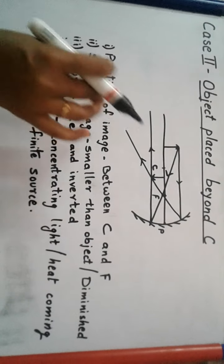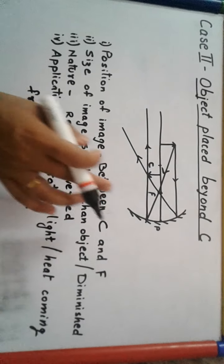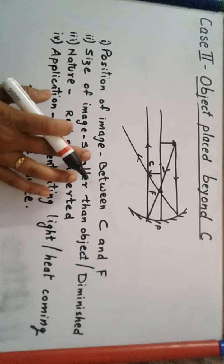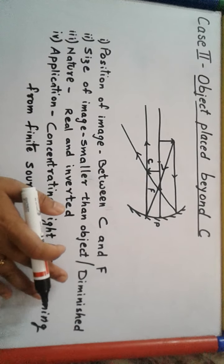Now, where is the image formed? Between C and F. You can see both rays intersect between C and F. So what is the position of the image? Between C and F. The size of the image will be smaller than the object, or you can write 'diminished.'